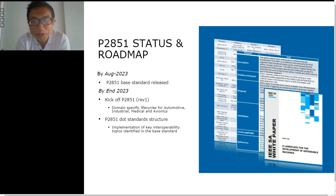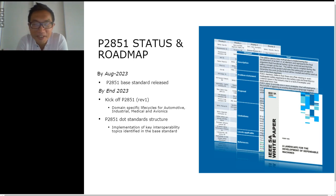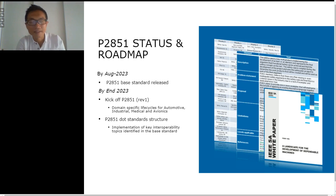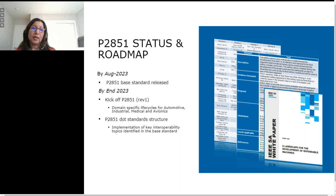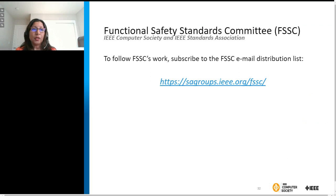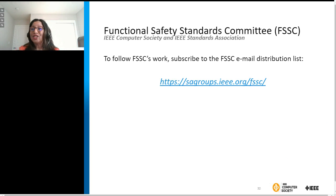We have two short questions. The first one: an audience member is excited about this work and wants to join, but doesn't know how to join as an entity. This is an entity-based working group, so anyone is free to join. Right now, base membership is free as well — so anyone can join free of cost as an observer. There is a membership fee associated with advanced membership, which gives the member voting rights. Here's the FSSC mailing list, and there's also a website for the P2851 where folks can contact myself or any of the other officers — we'd be happy to share that information.